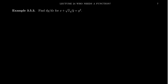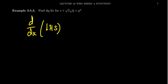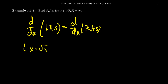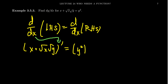What we're going to do is take the derivative with respect to x on both sides of the equation. On the left-hand side, we have to take the derivative of x plus the square root of x times the square root of y. I'm going to use a prime notation as shorthand for the derivative with respect to x. As we have two variables, it's important we remember we're taking the derivative with respect to x. Then we take the derivative of the right-hand side, which is y squared, with respect to x.